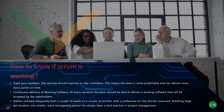Now we've talked a lot about Scrum ceremonies, priorities, artifacts, and debt — but how do you know if Scrum is actually working for you? It's simple: you track your numbers. If the velocity is improving or at least staying constant sprint over sprint, that means the team is predictable, it's delivering story points on time, and Scrum is working for you.